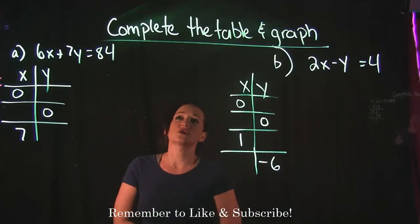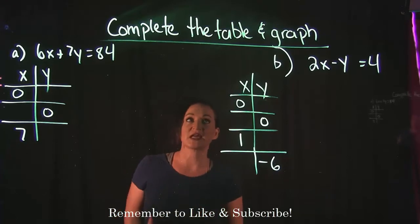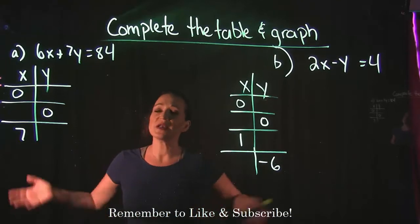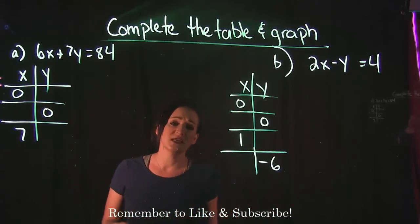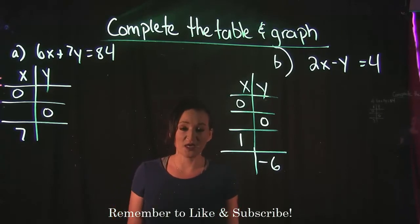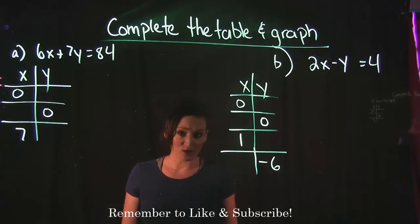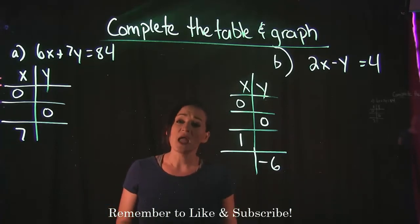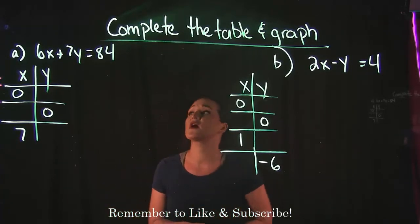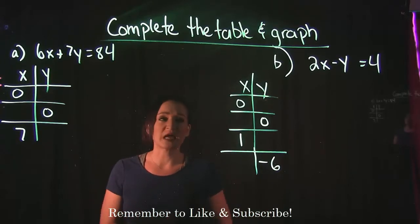Today's video is going to focus on how to complete a table and use that to graph a line. When it comes to graphing lines there are a few different techniques. The first technique tends to be completing a list of values either from a table or from ordered pairs, using them to plot on a graph and connect the dots. We're going to work through two examples.